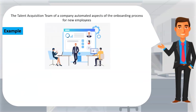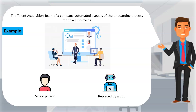A talent acquisition team automated aspects of the onboarding process for new employees. Previously, onboarding paperwork was completed manually by one person, consuming a significant amount of employee time that could have been spent on more valuable work — the type of work that no one wants to do day after day. The company understood that an HR department wants to provide a digital and straightforward experience. With the implementation of RPA, the bot completed the onboarding paperwork in less time, allowing HR staff to spend more time on corporate social responsibilities, hiring talent, and improving the company's reputation.